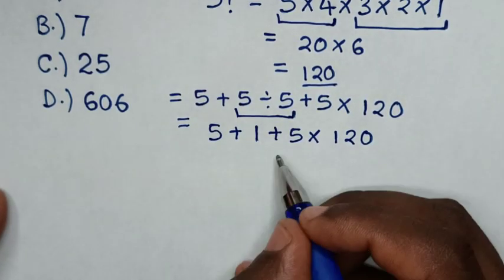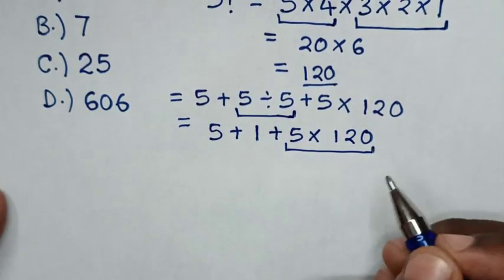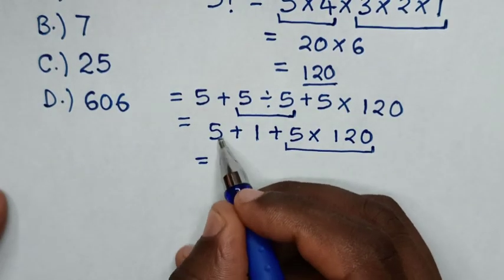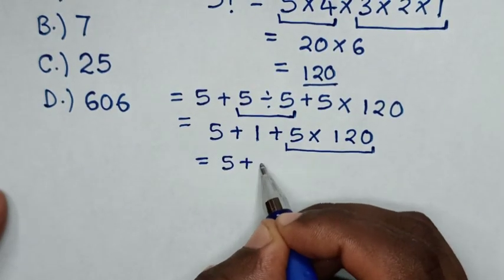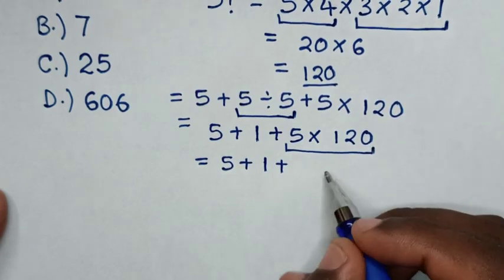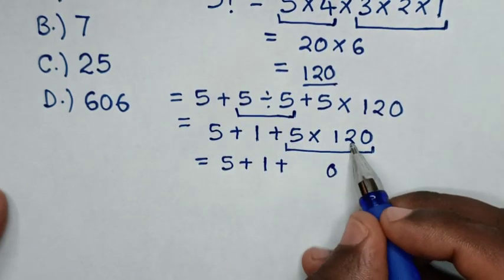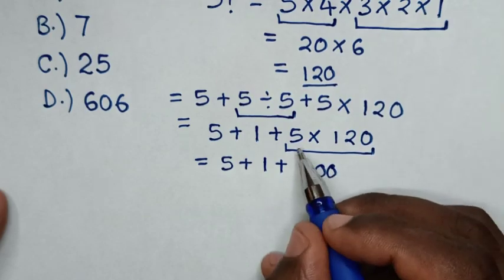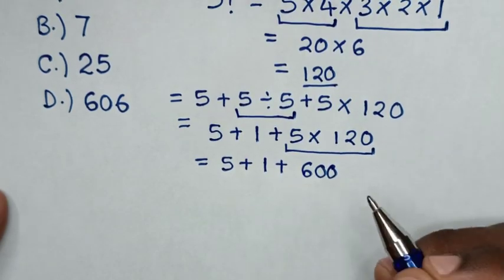Then we'll deal with multiplication. So it will be equal to 5 plus 1 plus, this times this is 0. 5 times 2 is 10. Go with 1. 5 times 1 is 5 plus 1 is 6.